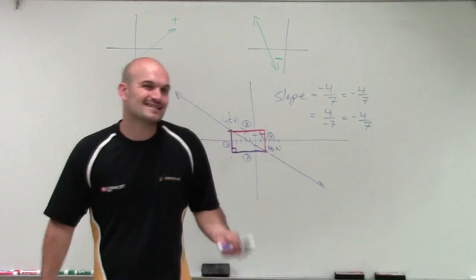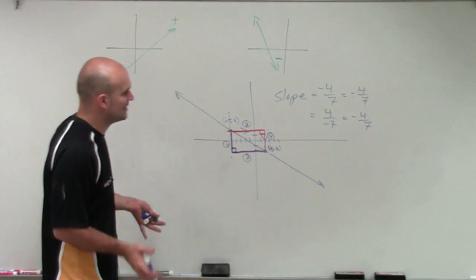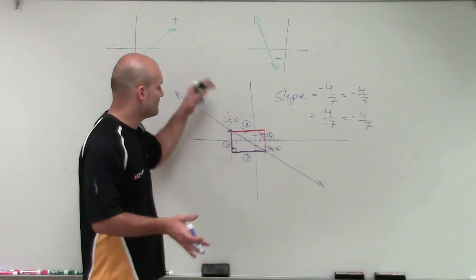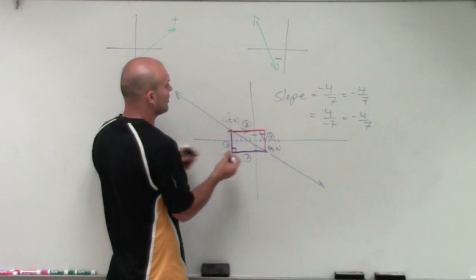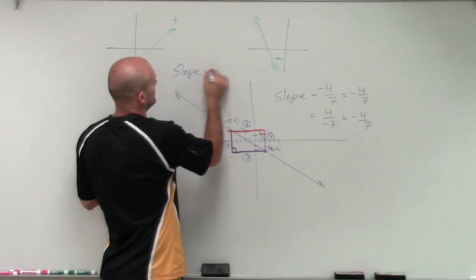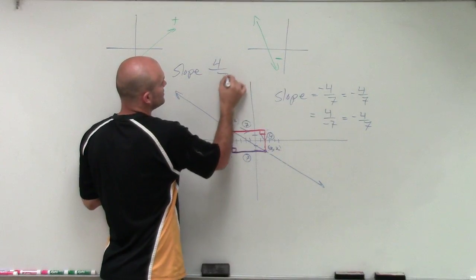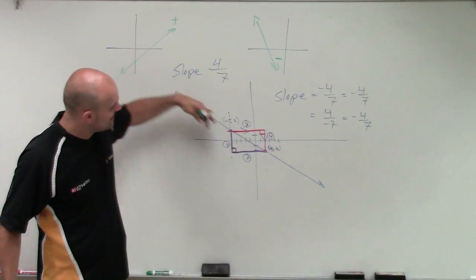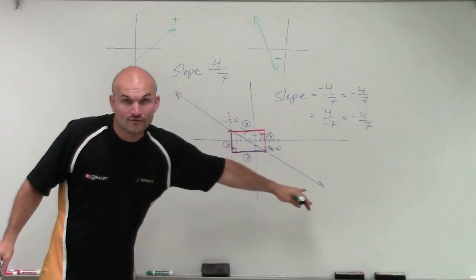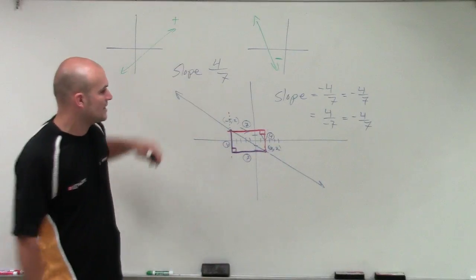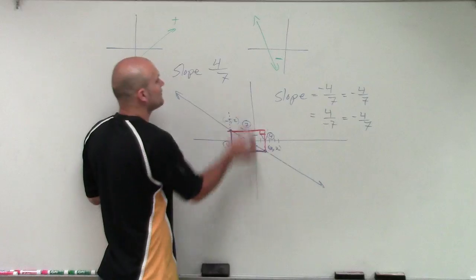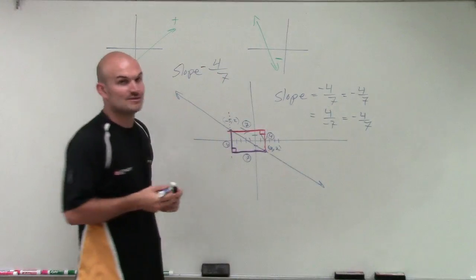However, sometimes I think this gets students a little bit confused. So here's what I like to do. Don't worry about what if it's going positive or negative. Just say, what's this distance? Seven, four. So therefore, I know my slope is four over seven. Then I determine what is my slope doing. Is it going down from left to right, or is it going up from left to right? And since this line is going down from left to right, I know that it has to be negative.